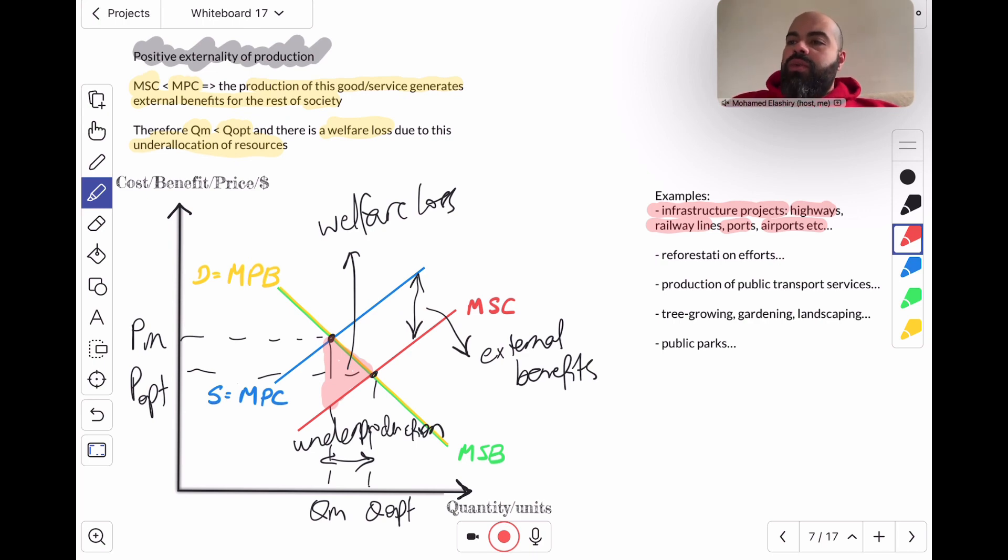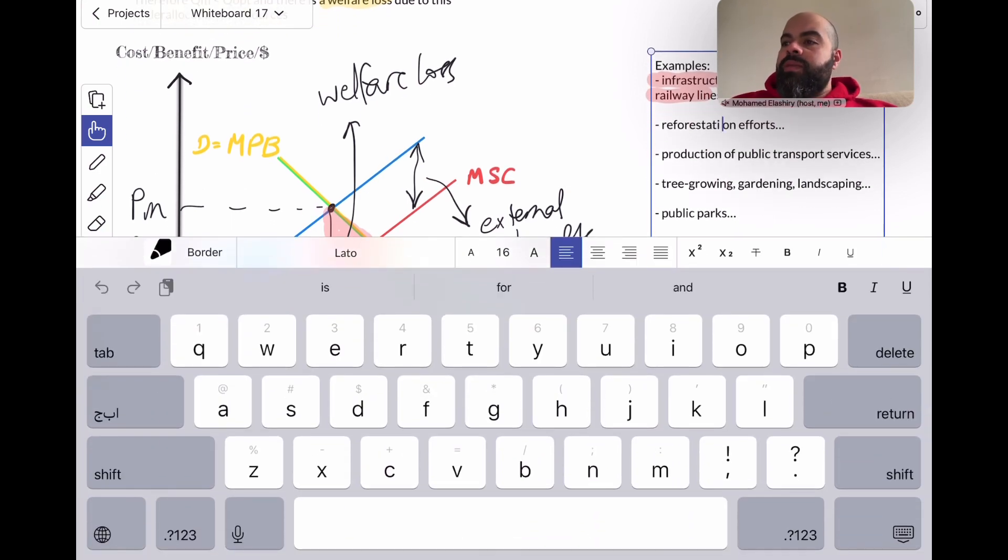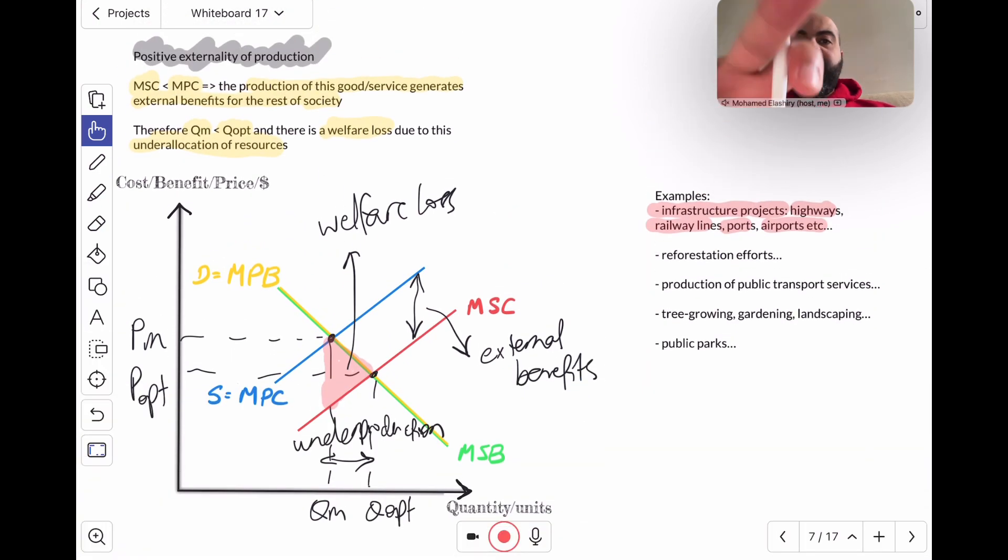Also, reforestation efforts, especially at the age we live in right now. Anyone who's planting trees, especially in the forests, is helping combat climate change. Because reforestation efforts, planting trees, trees will actually capture carbon from the atmosphere and give us oxygen. So it kind of offsets carbon emissions.